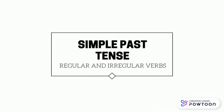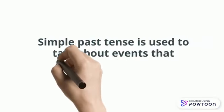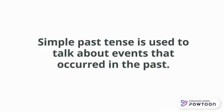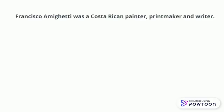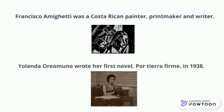Hello! Today we're going to learn about simple past tense. First, we must know that simple past tense is used to talk about events that occurred in the past. Here, we have two sentences that use past tense in their main verbs. For instance, Francisco Migueri was a Costa Rican painter, or Yolanda Aureamuno wrote her first novel.